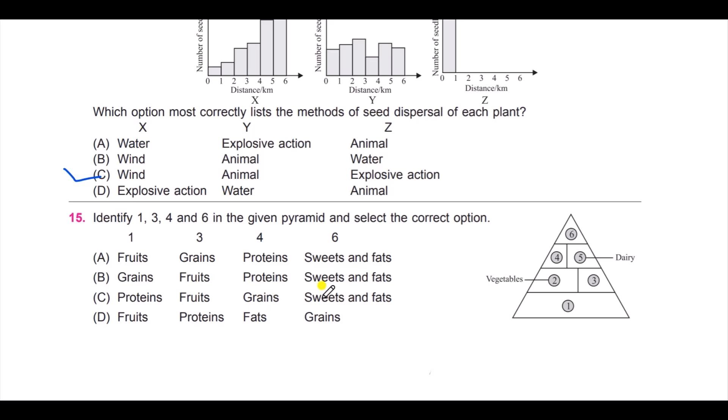C: proteins, fruits, grains, sweets and fats; and D: fruits, proteins, fats, grains. Now here you need to think about the food pyramid. And the answer is B. Here it comes: grains, then three fruits, then four proteins, and six sweets and fats.